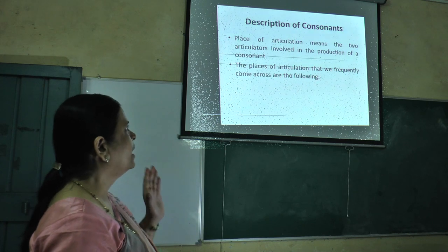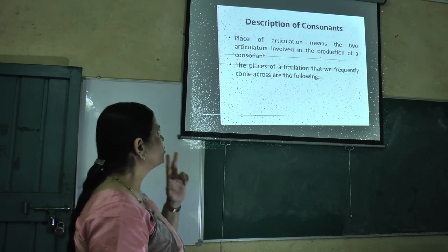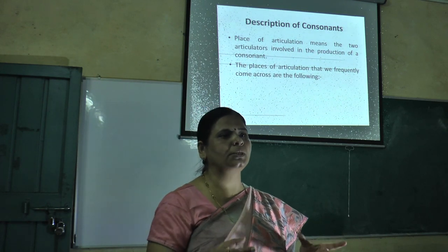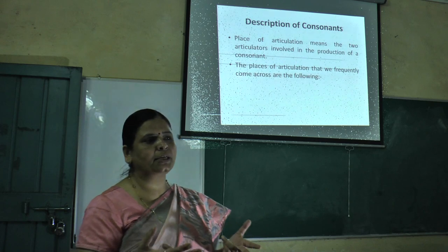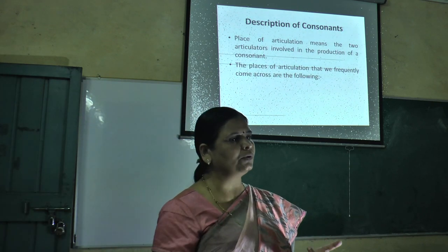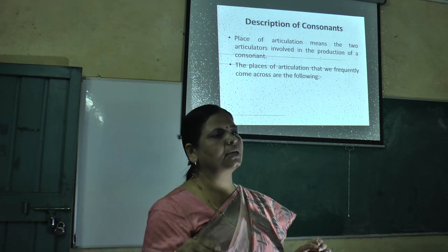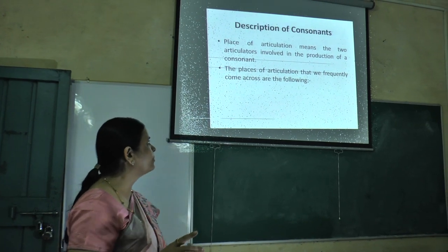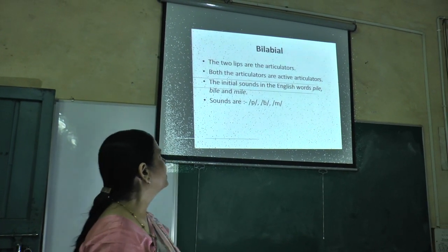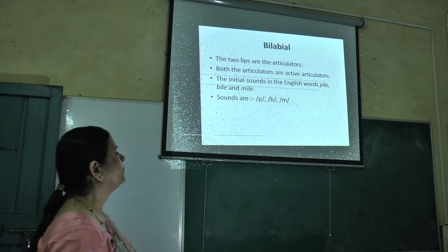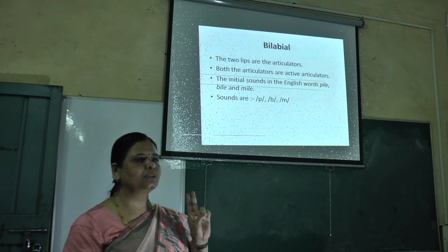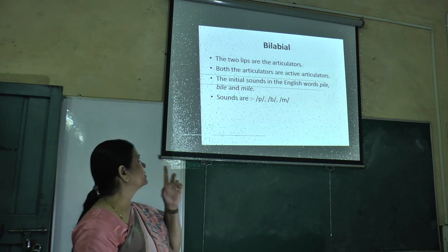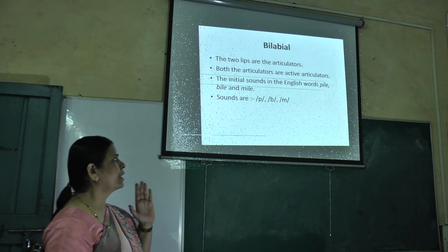Place of articulation means the two articulators involved in the production of consonants. When we pronounce any sound, two articulators or two organs are involved, and these two organs are called articulators. The first place of articulation is bilabial. As the name suggests, 'bi' means two and 'labial' means lips. So both lips are the articulators — both articulators are labial articulators.